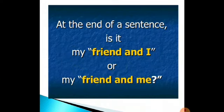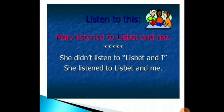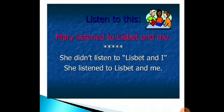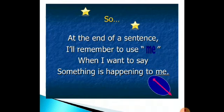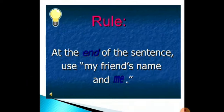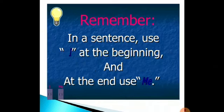There is a tricky part. At the end of a sentence, is it 'my friend and I' or 'my friend and me'? Listen to this: 'Mary listened to Lisbeth and me.' She didn't listen to 'Lisbeth and I' — she listened to 'Lisbeth and me.' After a preposition like 'listen to,' use the object pronoun 'me.' Write the friend's name first, but it will be 'me,' not 'I.' So at the end of a sentence, use 'me' when something is happening to you. In summary: use 'I' at the beginning and 'me' at the end.